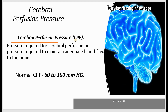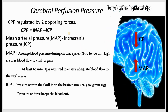CPP is regulated by two opposing forces: mean arterial pressure (MAP) and intracranial pressure (ICP). You calculate CPP by subtracting intracranial pressure from MAP — so CPP equals MAP minus ICP.